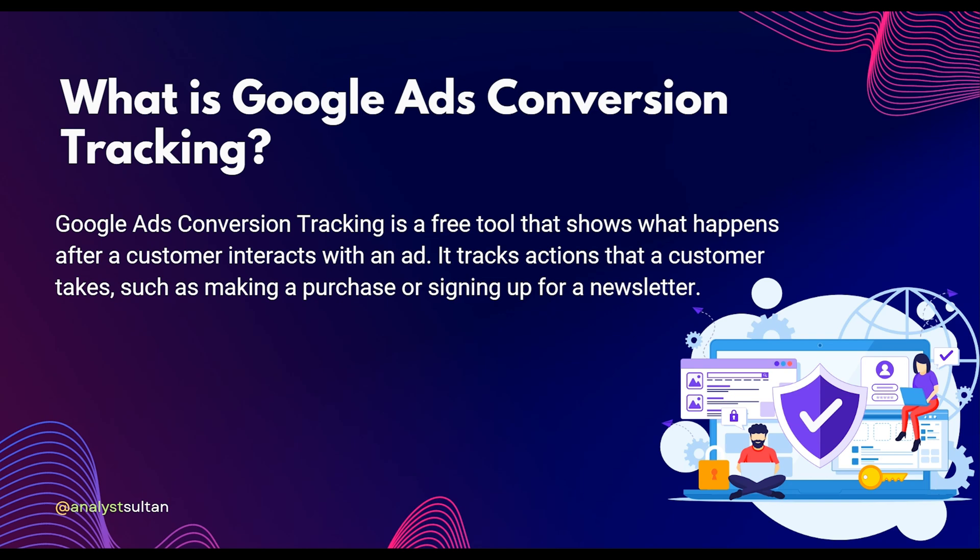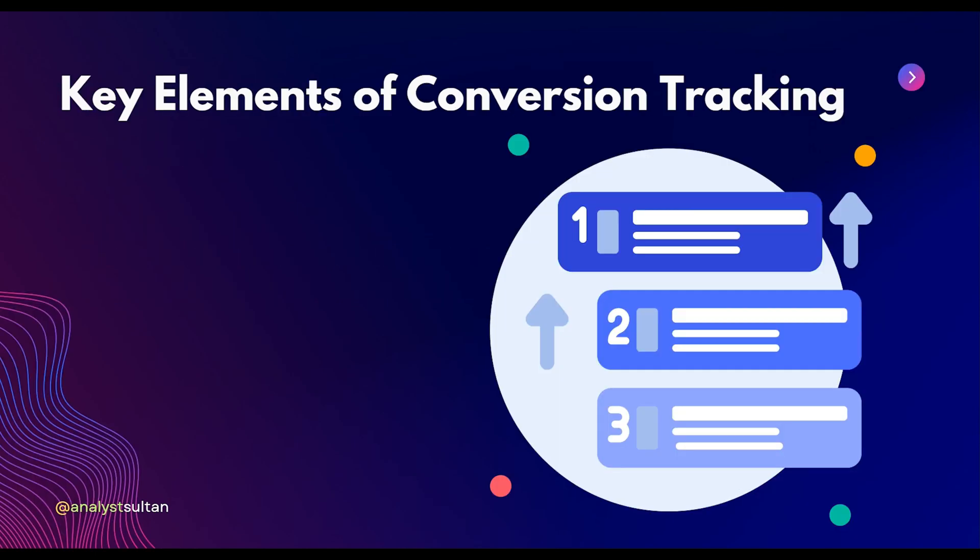Google Ads conversion tagging is a tool that measures the most valuable actions users take after clicking on your ads — whether it's making a purchase, filling out a form, or calling your business. Your conversion tagging is the key to understanding ROI. It helps you make smarter decisions by showing you what's working. Setup is simple: define your conversion — whether it's a sale, a lead, or a phone call — then add a small piece of code called a conversion tag to your website. This tag fires every time a user completes that action.